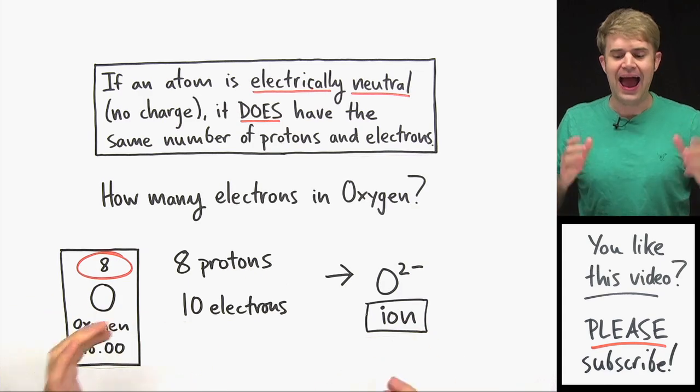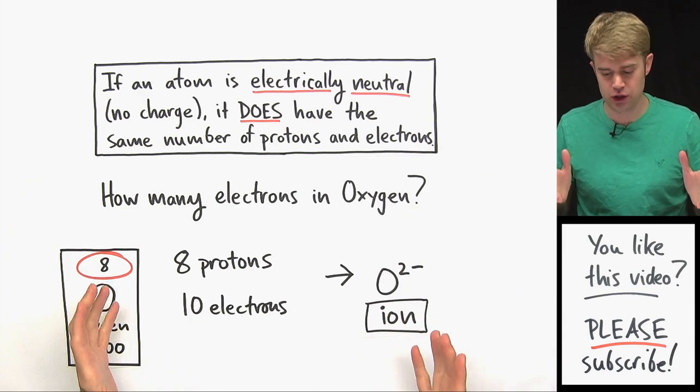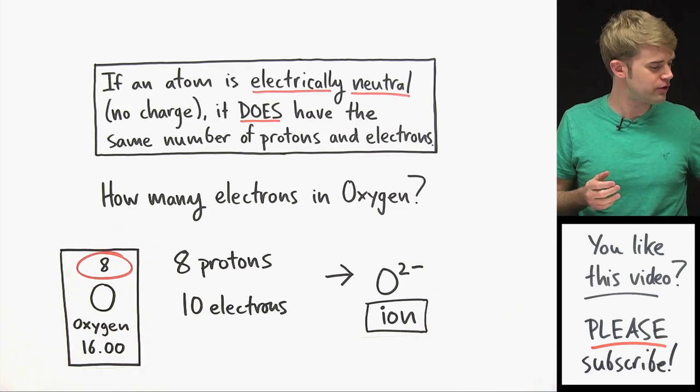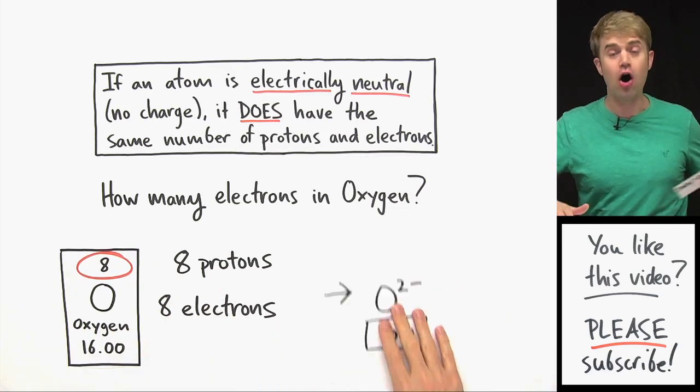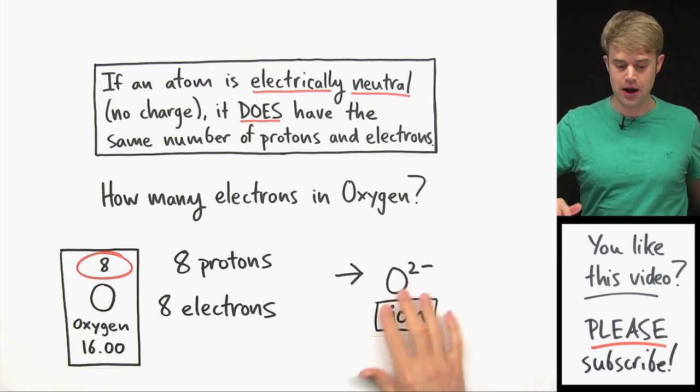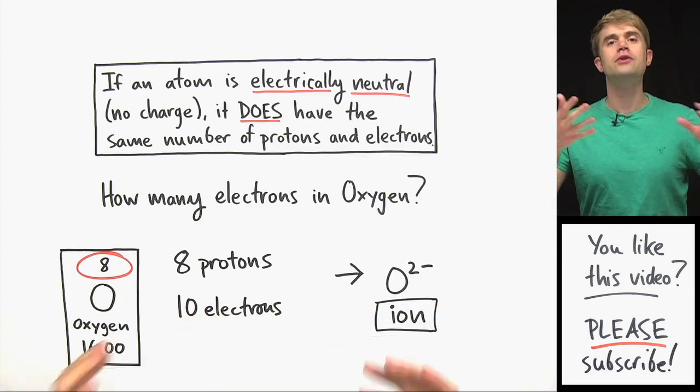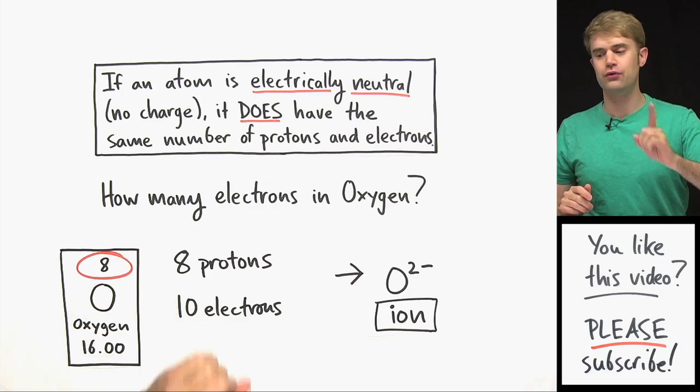So here's the point. Atoms don't have to be electrically neutral. They can have charges. If they are electrically neutral, then their number of protons and electrons are the same. But if they're not, the protons and electrons vary and we can get all different types of ions with different charges.